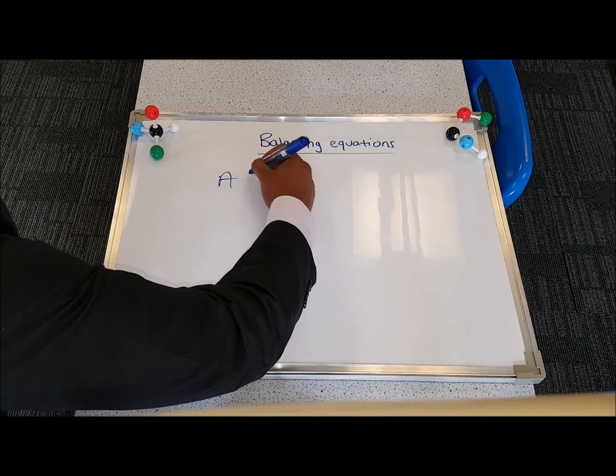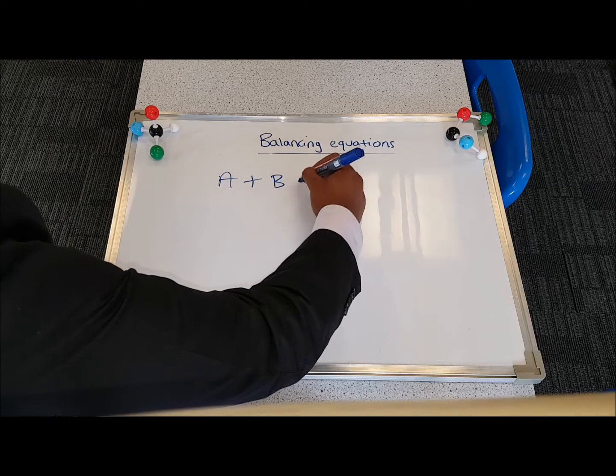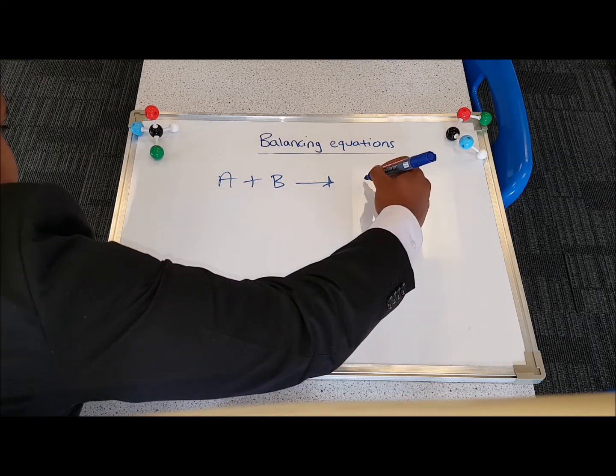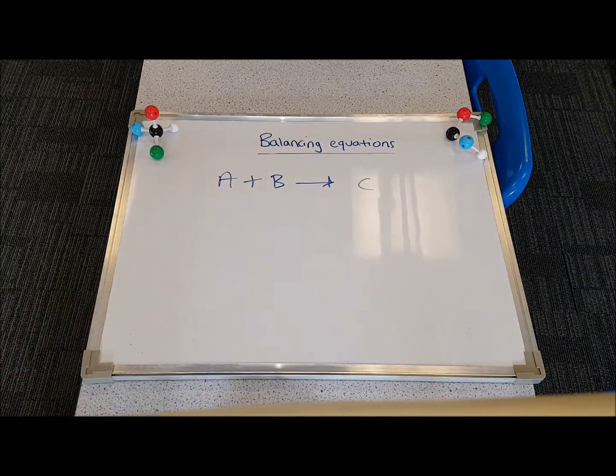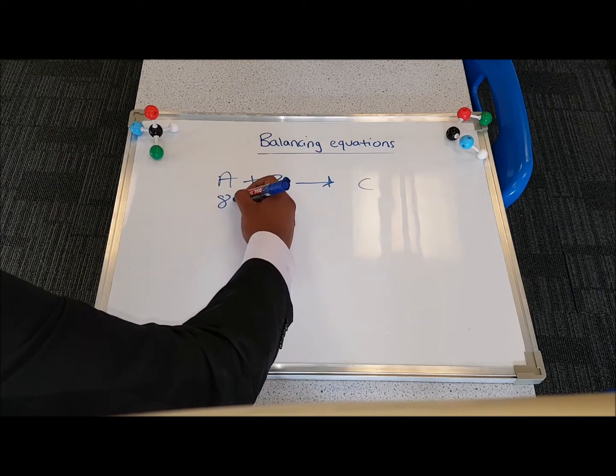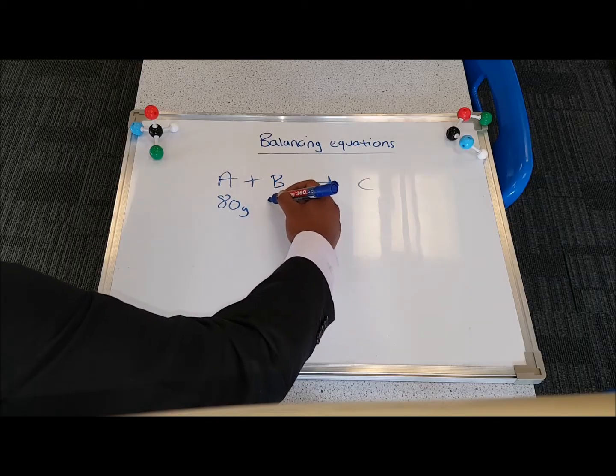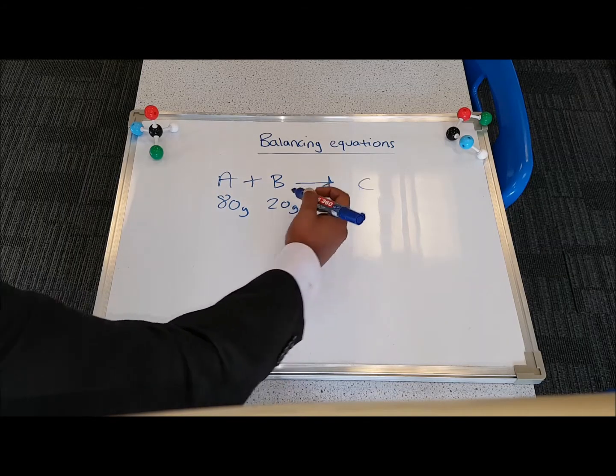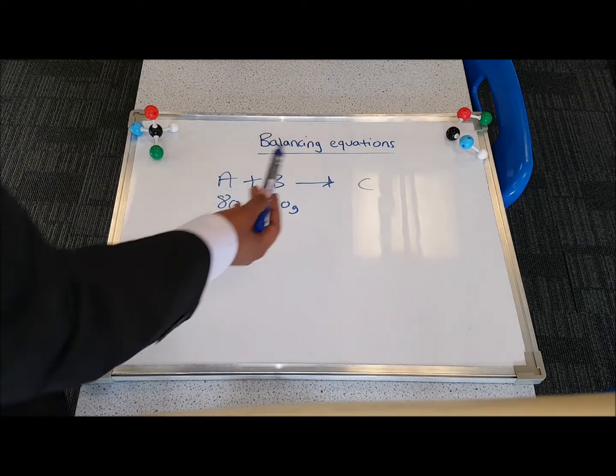For example, if I have my reactants A plus B giving us only a single product, C in this case. If the mass of A is 80 grams and the mass of B is 20 grams, what would be the mass of C?